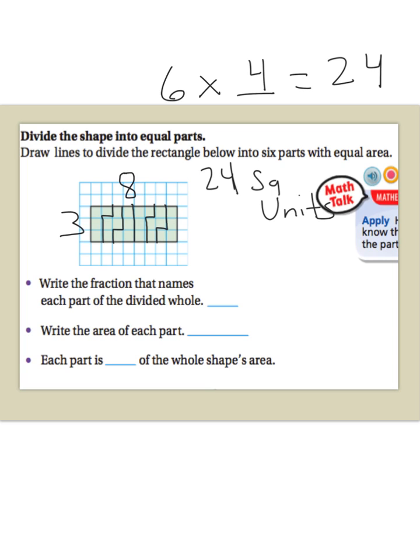Now, if I took one of those groups out of the whole, that would be 1 group out of how many? Well, if you said 6, you are correct. So, our unit fraction is 1 sixth. And, we already figured out that the area of each part is 4. So, each part is equal to 1 sixth of the whole shape's area.